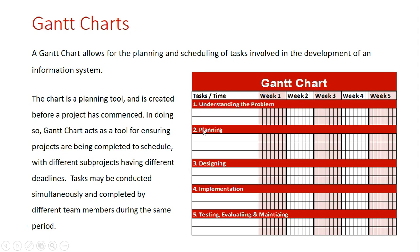The stages included are: understand the problem, planning, designing, implementation and testing, evaluating, and maintaining. You can include sub-projects occurring at those stages — for example, interviewing participants and the creation of the requirements report, each allocated about one week. At the planning stage we have updating the requirements report, development of a prototype, and feasibility study. Different parts of the project can be happening at the same time, carried out by different team members.